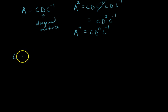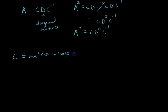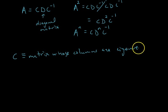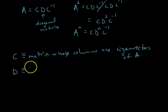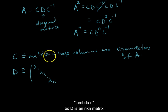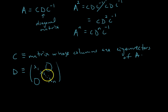The matrix C is defined to be a matrix whose columns are eigenvectors of A — not necessarily all eigenvectors, since there are infinitely many, but we'll talk about this more. The matrix D is defined to be a diagonal matrix with eigenvalues λ₁, λ₂, ..., λₙ along the main diagonal and zeros everywhere else, so the entries on the main diagonal are the eigenvalues.